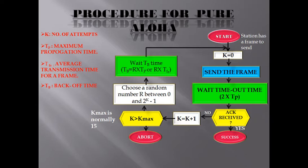If ACK is received, the transmission is successful. If ACK is not received, we implement a retry attempt. If the first attempt fails, try a second attempt then k equals 1, and the cycle continues until k reaches its maximum level. K max is normally 15. If k is less than 15, the backoff range is 0 to 2^k − 1, where k is the number of attempts. Randomness helps in removing collisions. Here Tp is maximum propagation time, Tfr is average transmission time for a frame, and Tb is back-off time.